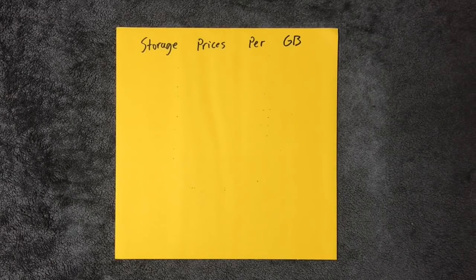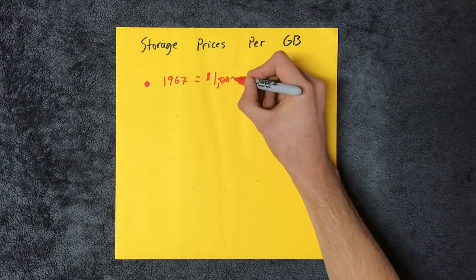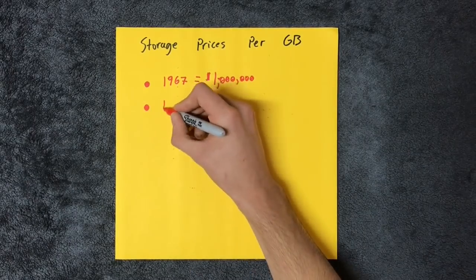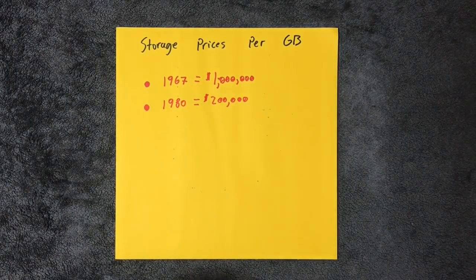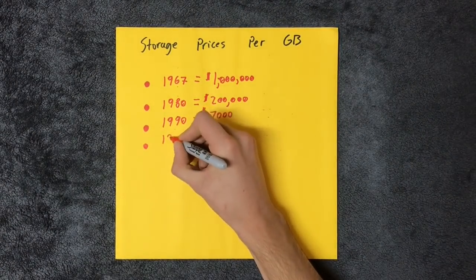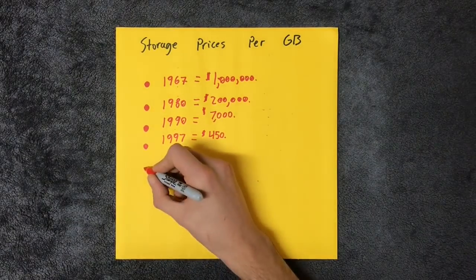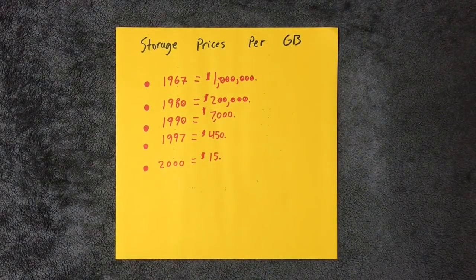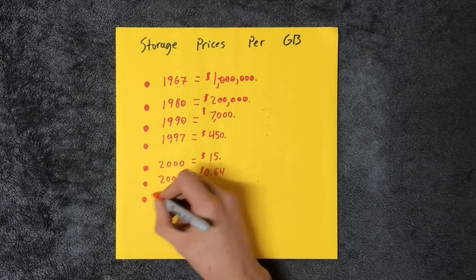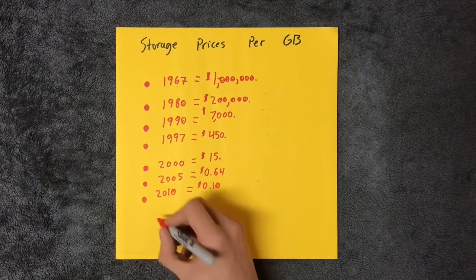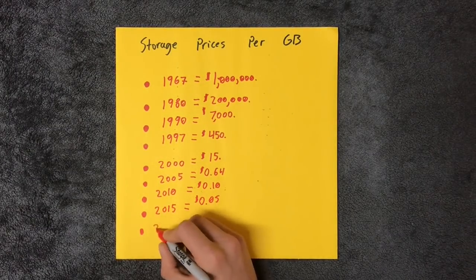But storage gets cheaper over time due to Moore's Law. Let's look at prices per gigabyte over the past 50 years. In 1967, it was $1 million per gigabyte. 1980, $200,000. 1990, $7,000. 1997, 20 years ago, $450. 2000, $15. 2005, $0.64. 2010, $0.10. 2015, $0.05. 2017, $0.02 per gigabyte.